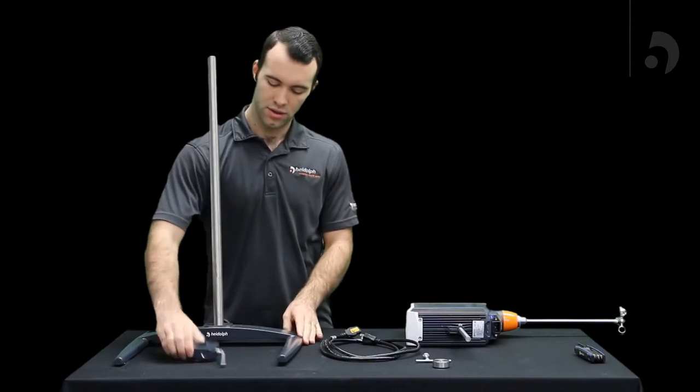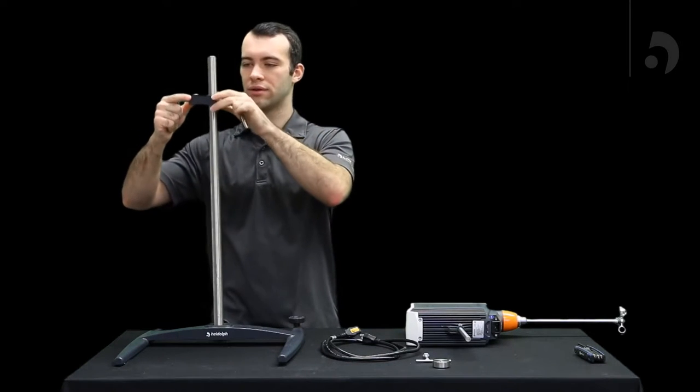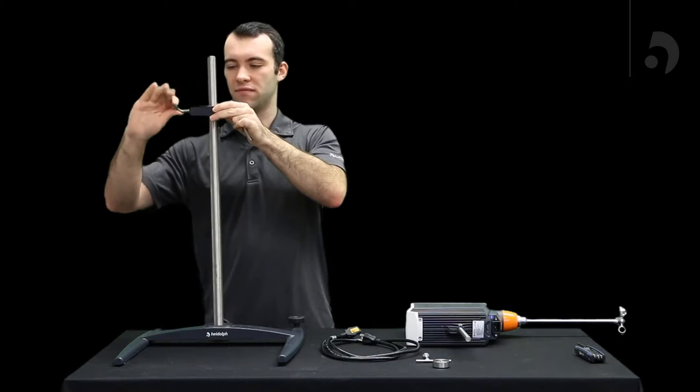Once that rod's in there you can take your universal clamp, loosen it to where you can get it over the rod, and then make it very tight.